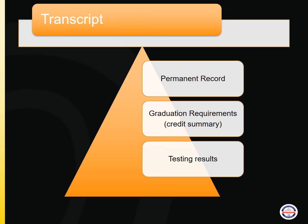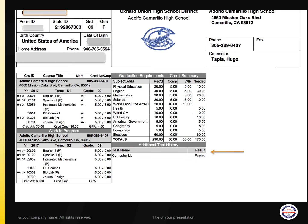Your transcript is your permanent confidential record of all the classes you have taken at ACHS and all of the grades you've received in those classes. Here's an example of a second semester freshman transcript with the grades and classes taken in the first semester, the current classes being taken in the second semester, and the credit summary box in the middle.